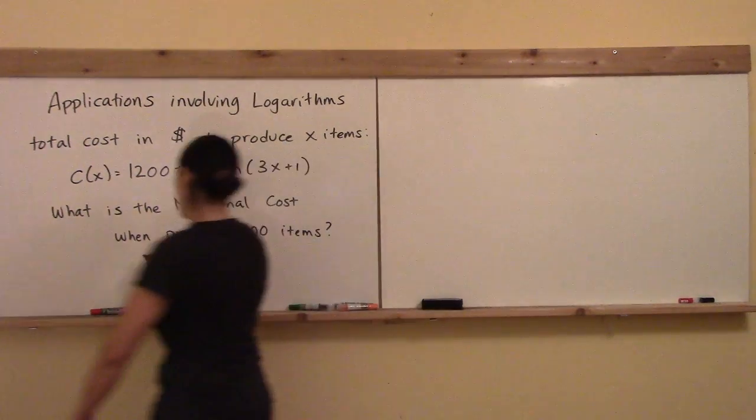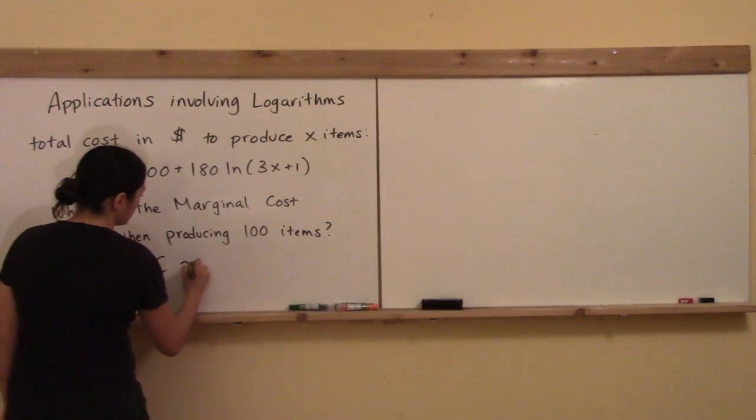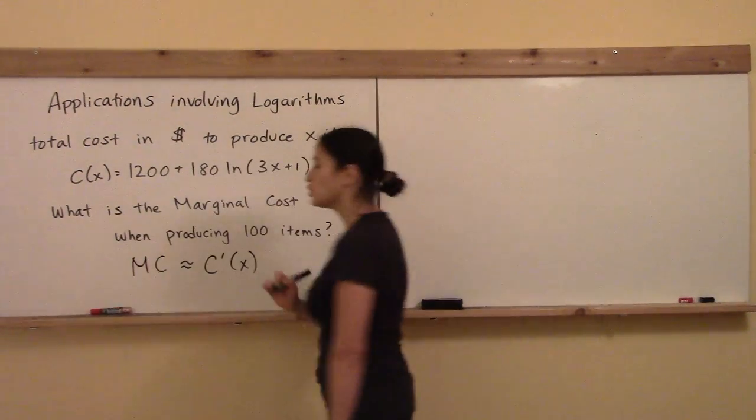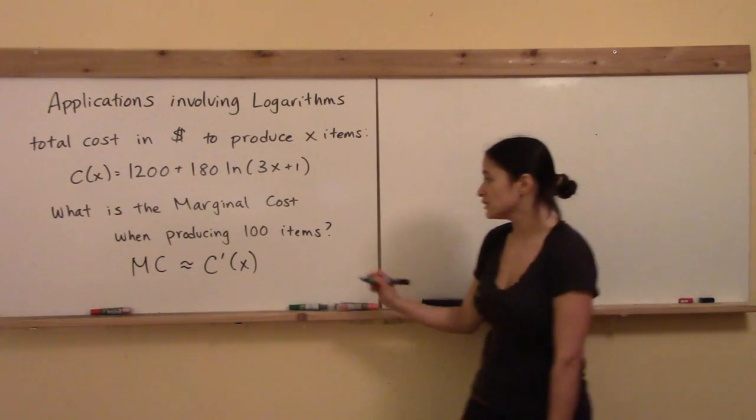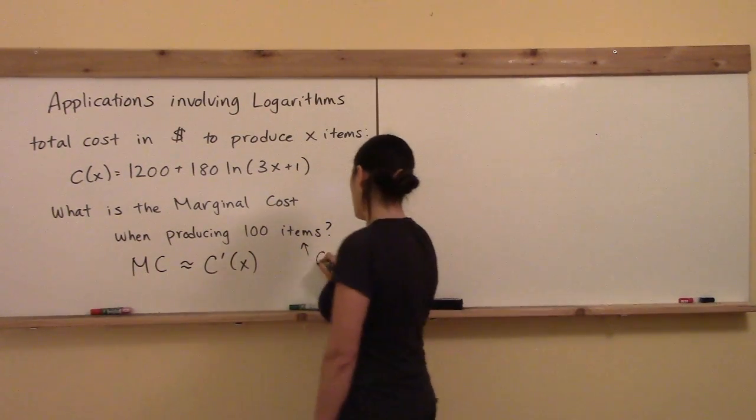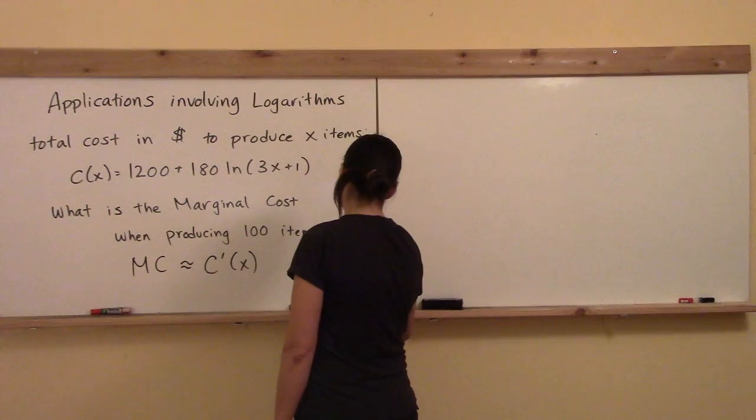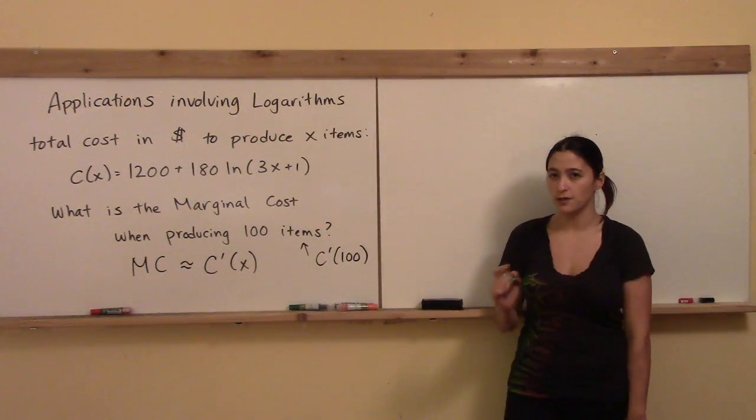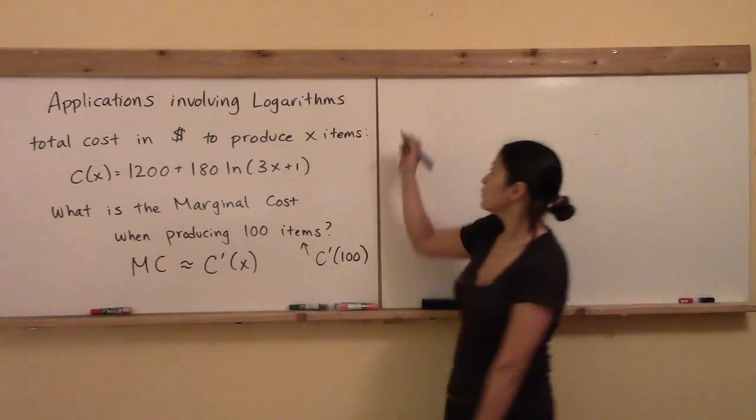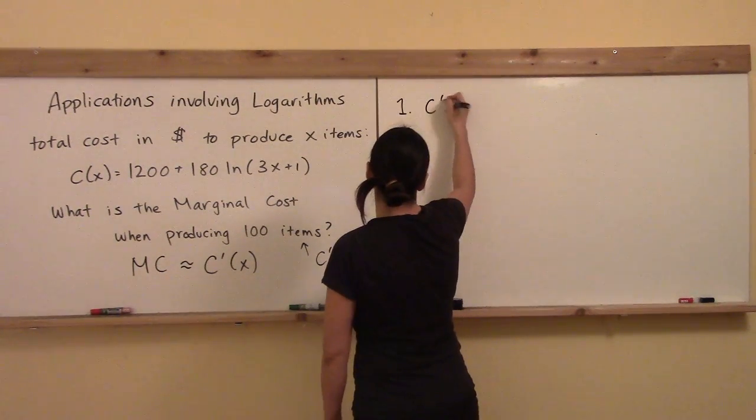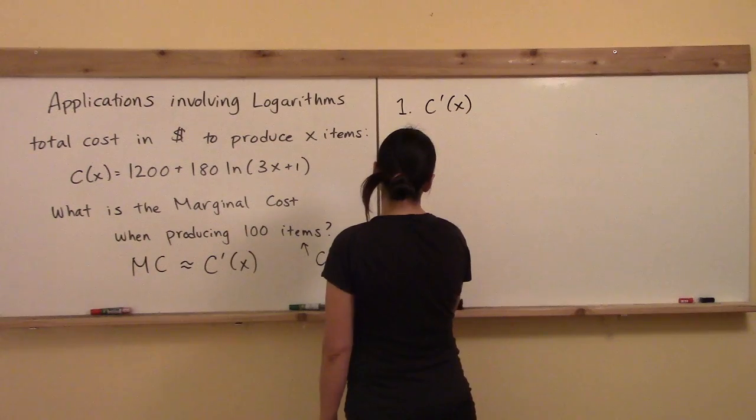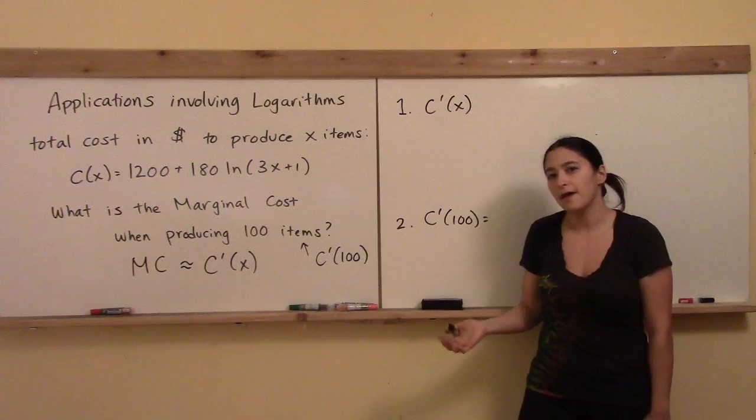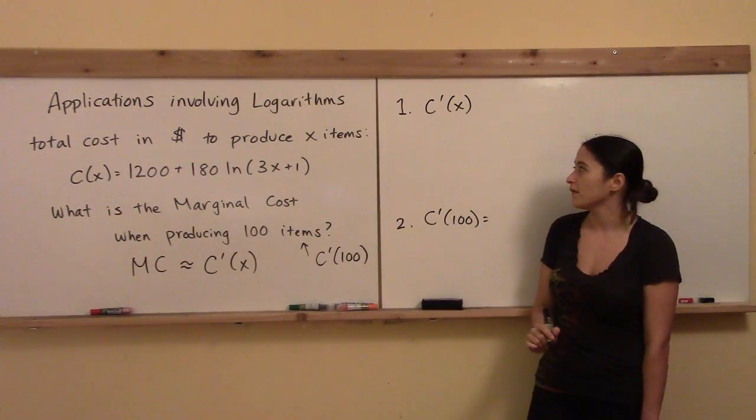Now as we've already discussed, the marginal cost is very well approximated by the first derivative of the total cost function. And so we're going to answer this question right here by computing the first derivative of C evaluated at x equals 100. The first step will be writing down what is the functional form of the first derivative of C, and then the second step will be to plug in the number 100 and get an actual value, and then we can discuss what the units would be on that value.